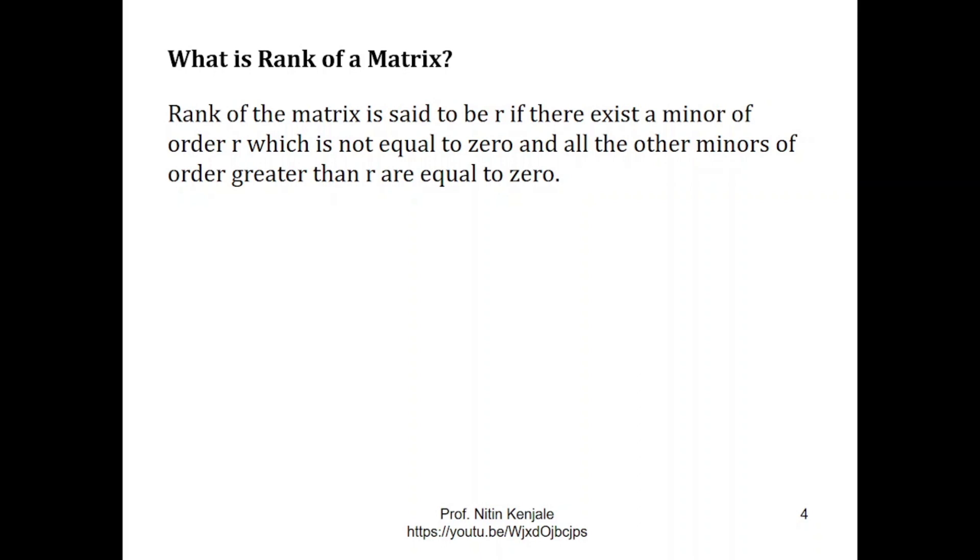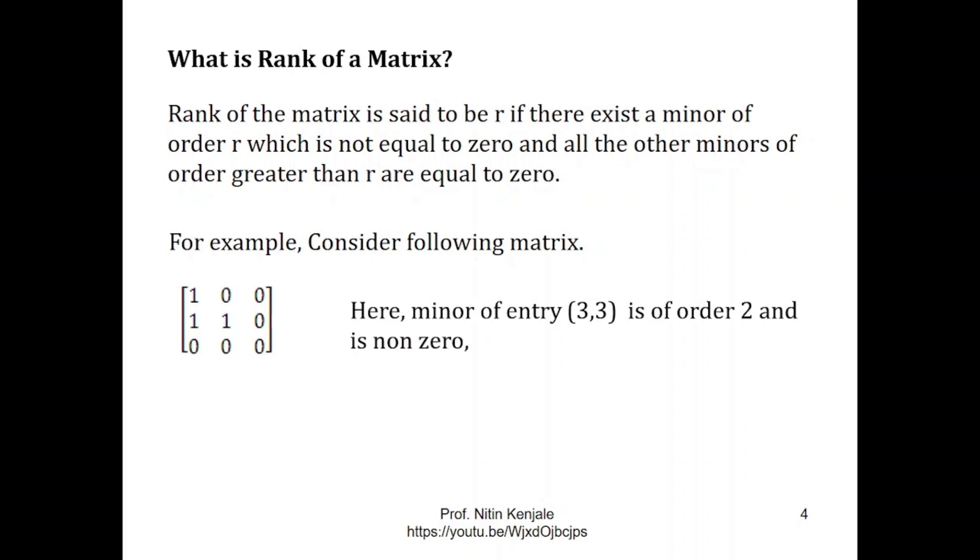Let me explain this definition with the help of an example. Consider this 3x3 matrix. Here minor of entry (3,3) is of order 2 and is non-zero. That means minor of this entry is this sub matrix and its determinant is not equal to 0.